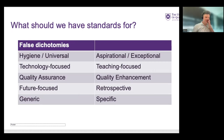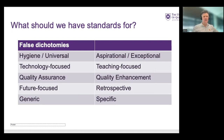I'll quickly run through the results. Universal versus aspirational versus exceptional was very tightly tied — about 50/50. 85% of people went teaching focused over technology focused. 68%, about two thirds, went for quality enhancement over quality assurance. 94% were future focused. And 64% went specific over generic. So that's where we ended up.